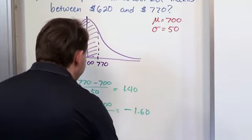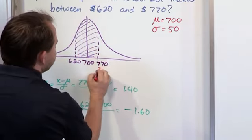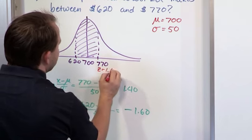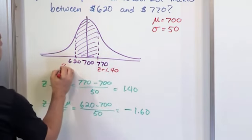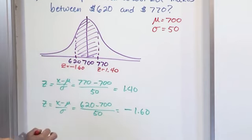So ultimately, you can redraw this if you want, but ultimately just know that this one corresponds to a z-value of 1.40, and this one corresponds to a z-value of negative 1.60. That helps you visualize what you're going to end up doing.